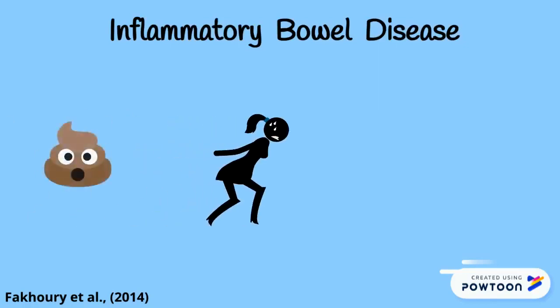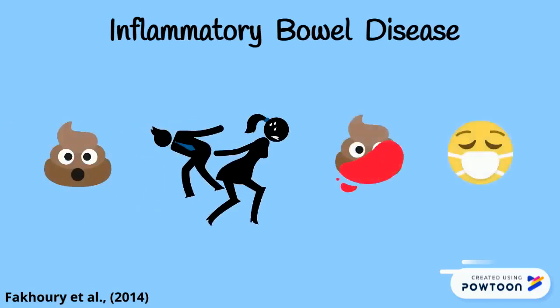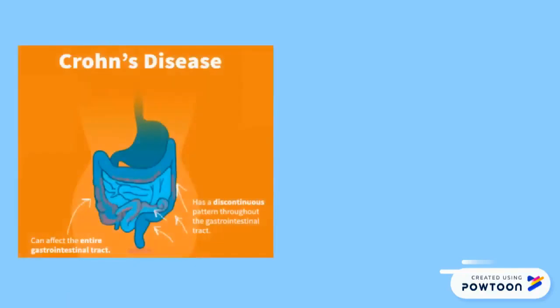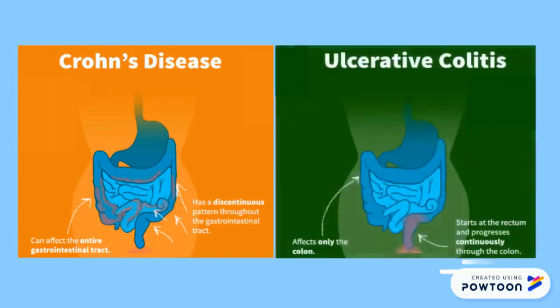People affected by these diseases experience shared abdominal symptoms such as diarrhea, abdominal pain, bloody stools, and vomiting. Specifically, Crohn's disease causes inflammation along the lining of the digestive tract. In contrast, in ulcerative colitis, long-lasting inflammation occurs in some parts of the digestive tract, primarily the colon.